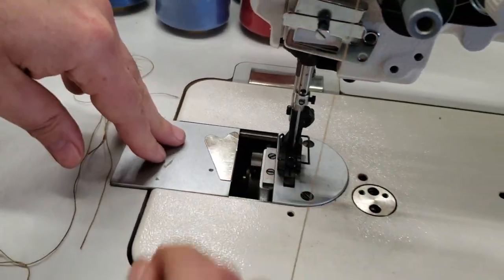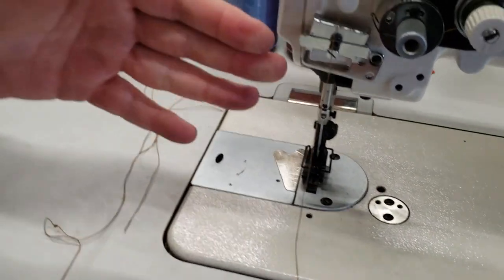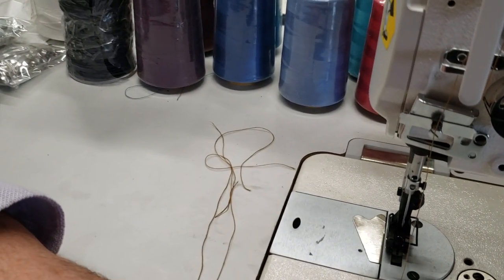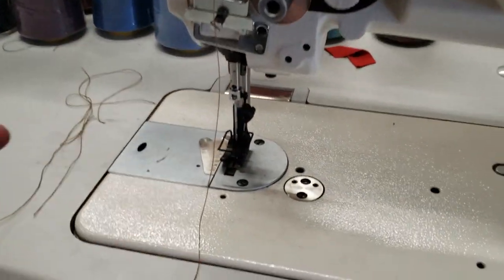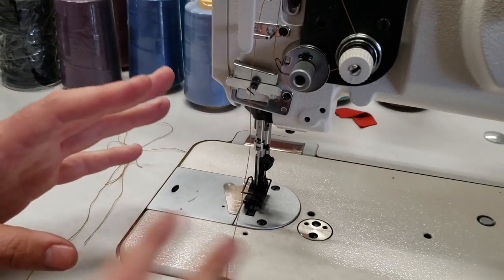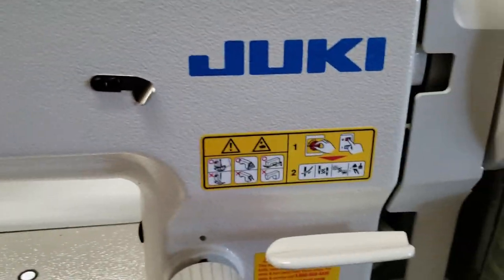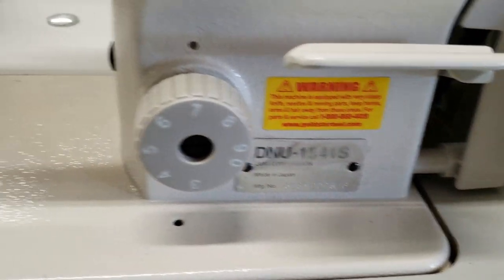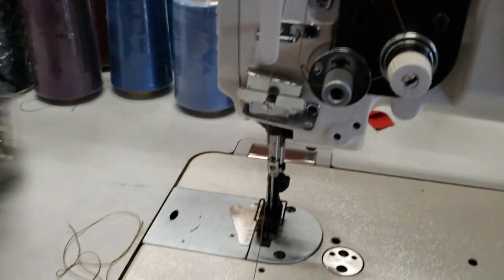You don't have to worry about it. Juki, Consew, NewTech, Brother, Mitsubishi, home, industrial, walking foot. This is a walking foot Juki 1541-S, but all the machines have a slide and we have lots of them installed.